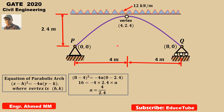Since the arch has endpoints P and Q at (0, 0) and (8, 0), we can substitute one of these points along with the known vertex (h, k) = (4, 2.4) to find parameter a. Putting in point (8, 0): (8 − 4)² = −4a(0 − 2.4), which gives us a = 4 / 2.4.